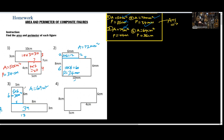For the perimeter of shape 3, we just add all the outside sides. 13 plus 3 is 16. 16 plus 6 is 22. 22 plus 5 is 27. 27 plus 6 is 33. 33 plus 8 is 41. And 41 plus 3 is 44. So the perimeter is 44. That is correct.